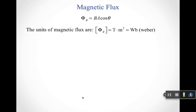In terms of units, you can see from our simplified equation that the units of magnetic field are Teslas and the units of area are meters squared. Cosine theta doesn't have any units — it's just a number. So the units of magnetic flux are Tesla meters squared, but that's also called a Weber. We will refer to the units of magnetic flux in terms of Webers.